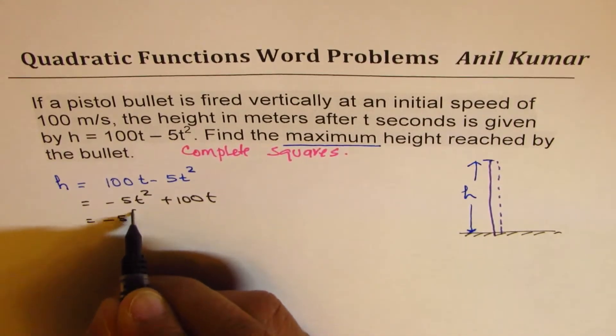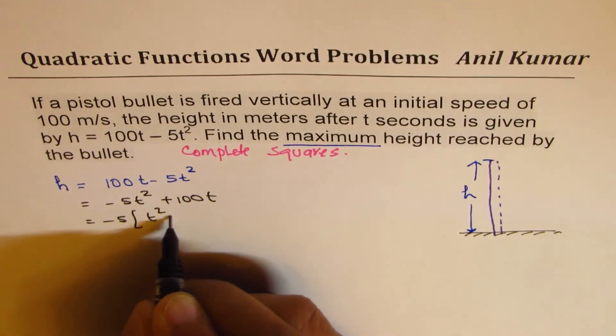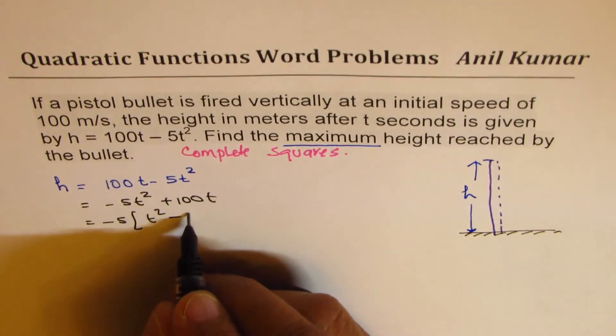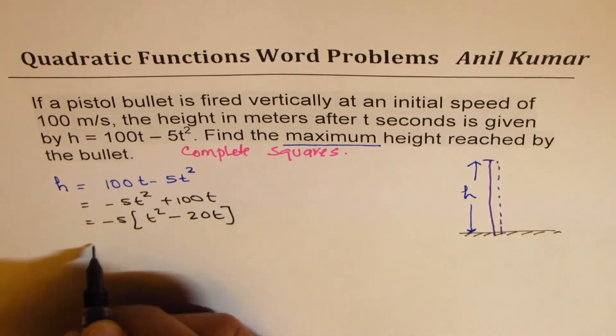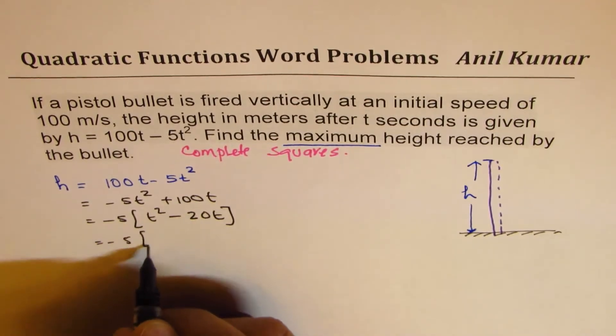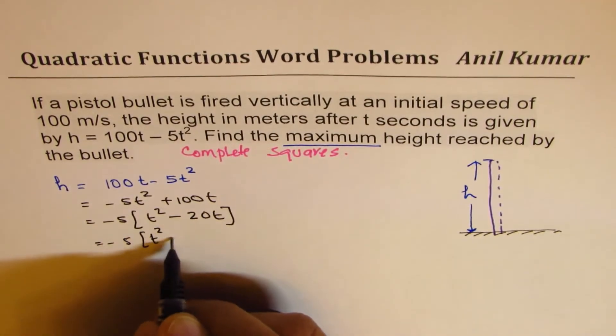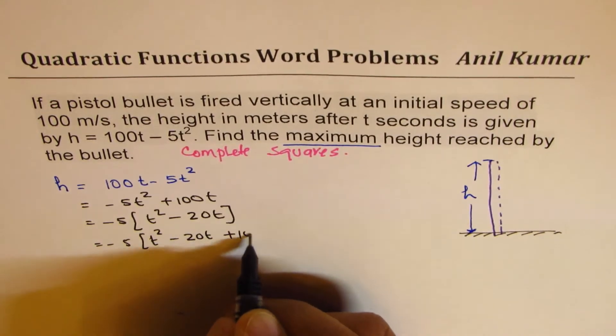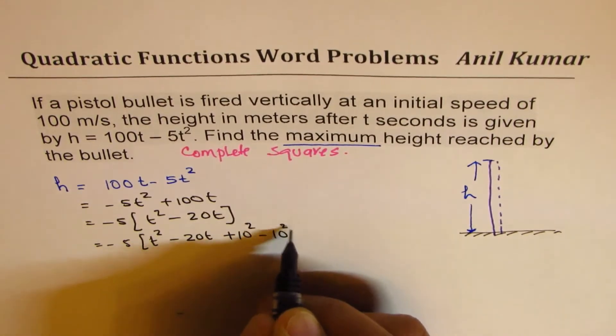Take minus 5 common. So we have t squared minus 100 divided by 5 is 20t. Now we do half of 20, which is 10.